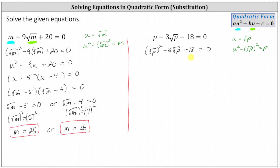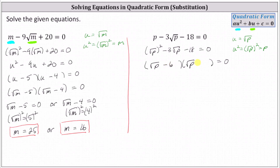If this does factor, it'll factor into two binomial factors, where because the first term is a square of the square root of p, we have the square root of p in the first positions. For the second positions, we want the factors of negative 18 that add to negative three, which are negative six and positive three, giving us a factor of the square root of p minus six, and the square root of p plus three. Notice negative six times three is negative 18, and negative six plus three is negative three.